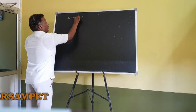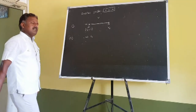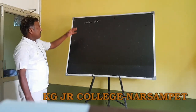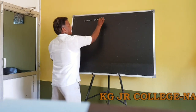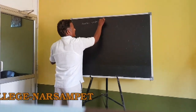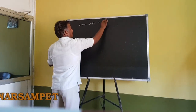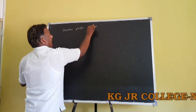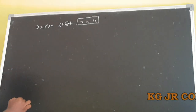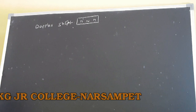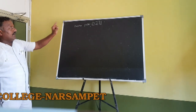What is Doppler shift? The apparent frequency is N dash and the virtual frequency is N. The difference between apparent frequency and virtual frequency of sound is called Doppler shift.